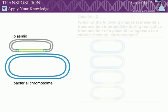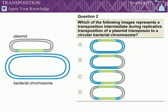Question 2: Which of the following images represents a transposition intermediate during replicative transposition of a plasmid transposon to a circular bacterial chromosome?